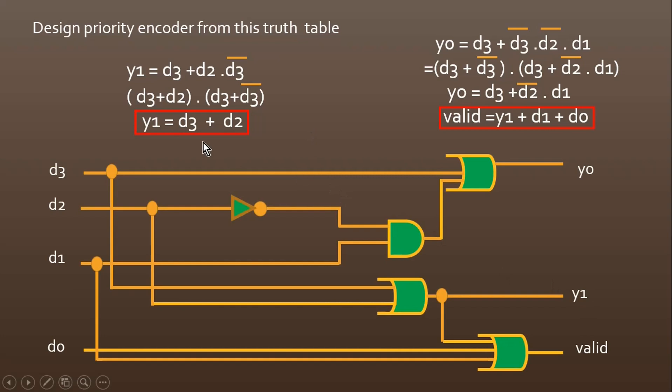From these expressions, it is very easy to write the digital design also. Let me draw it for you. Y1 equals d3 plus d2, so d3 and d2 go into an OR gate and we get y1. Similarly, y0 is d3 plus d2 bar times d1 and finally an OR gate gives y0. Similarly, you can design valid. Valid equals y1 plus d1 plus d0. So this is our final implementation.